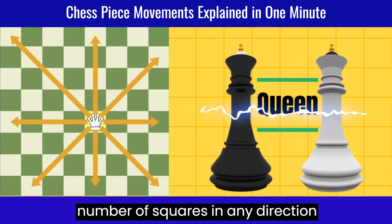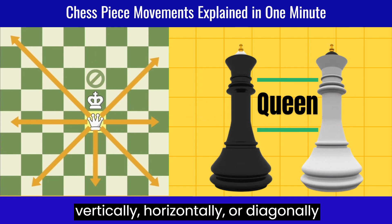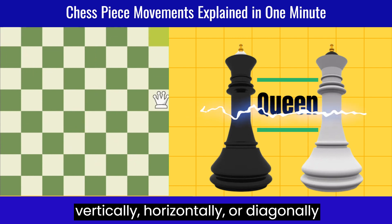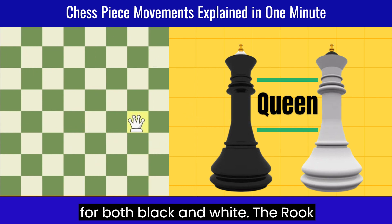The queen moves any number of squares in any direction—vertically, horizontally, or diagonally—for both black and white.